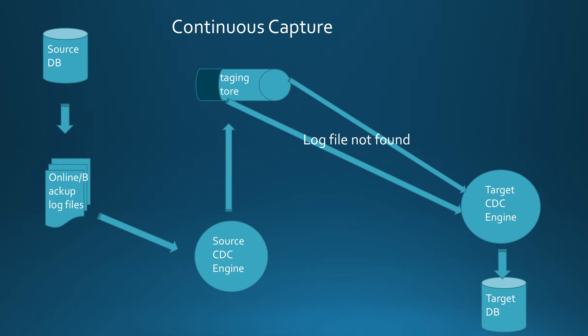Besides the risk of losing backup log files due to purging, a prolonged outage of replication could result in resource utilization spikes when subscriptions are restarted again. To optimize this operation and reduce the impact of IIDR CDC in large distributed environments, you may consider enabling the continuous capture feature.